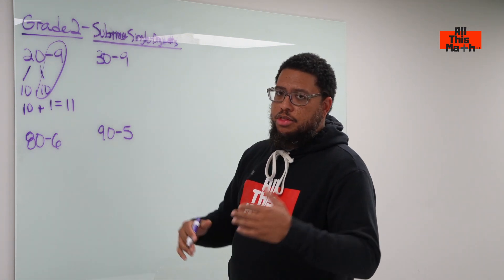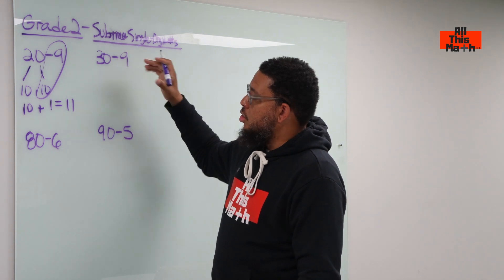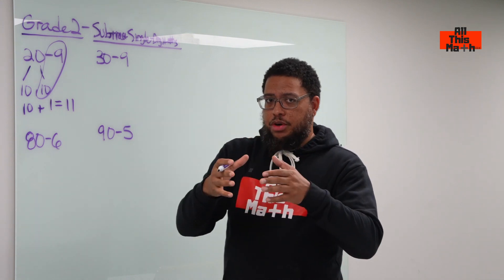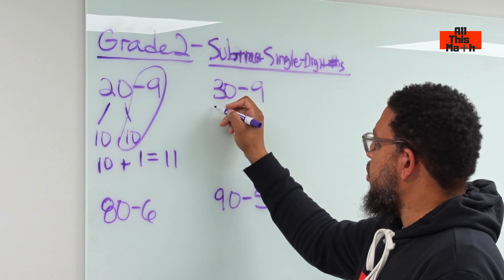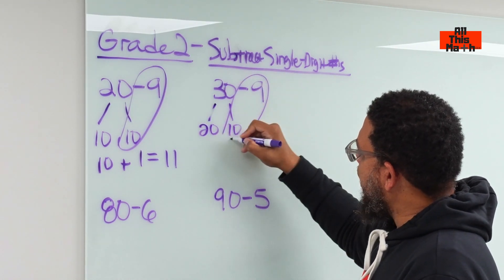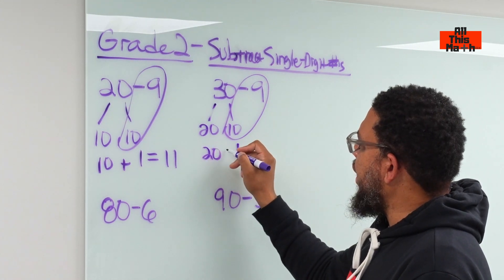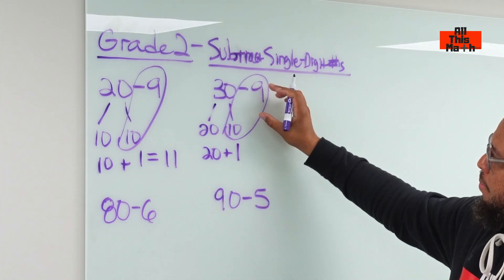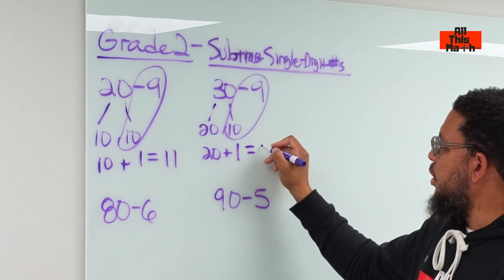Then we get to the next example: 30 take away 9. We want to make a 10 because we want to subtract 9 from 10. But where are we going to get the 10 from? We're going to get it from 30 — we decompose 30 and break it down into 20 and 10. Then we do 10 take away 9, which gives us 1. We bring the 20 down and do addition: 20 plus 1 leaves us with 21.